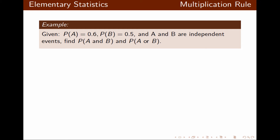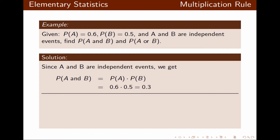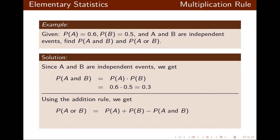In this example, we're given probability of A and probability of B, and we're also told that A and B are independent events. We need to find probability of A and B and probability of A or B. Since A and B are independent, probability of A and B is simply probability of A times probability of B, which gives 0.3. For probability of A or B, we use the addition rule: probability of A plus probability of B minus probability of A and B. Using the given information, probability of A or B equals 0.8.